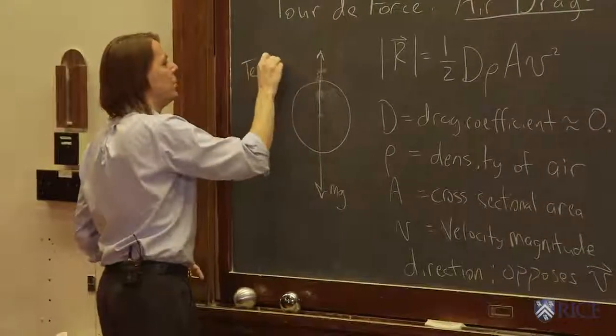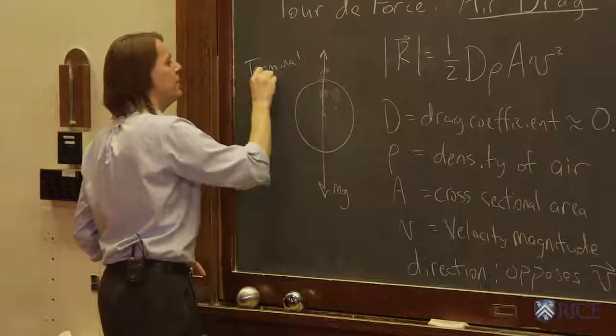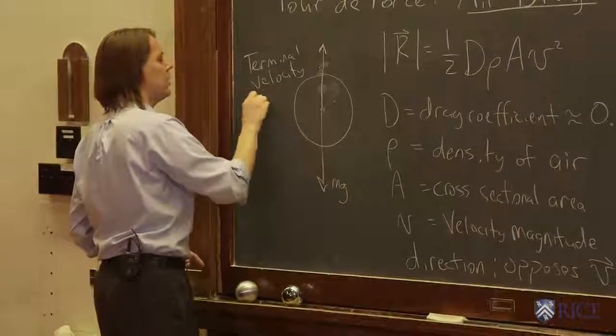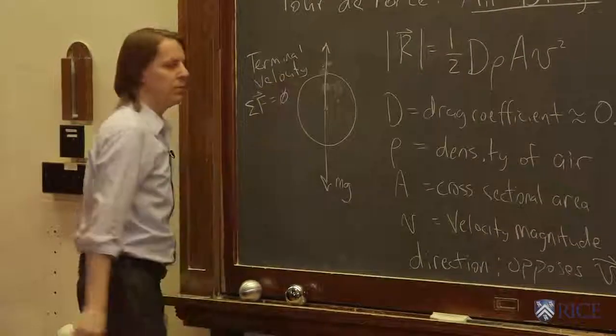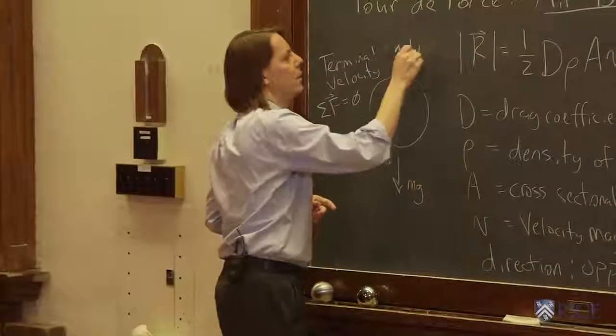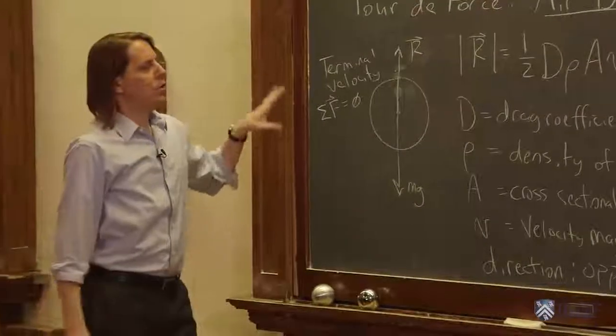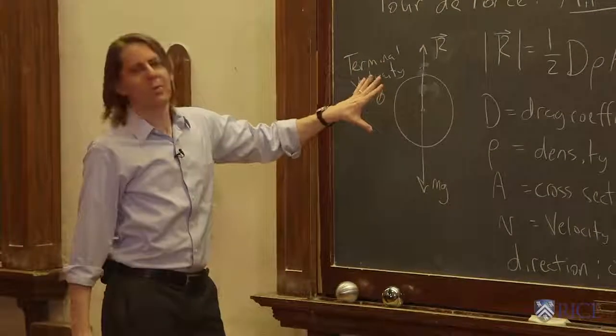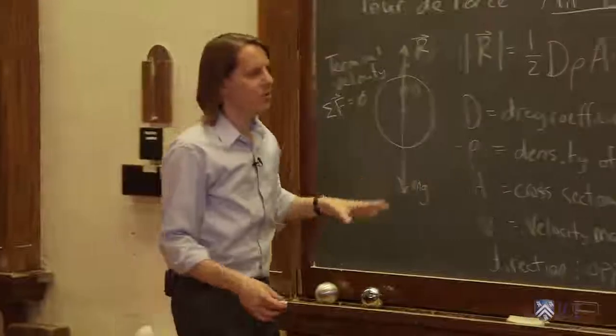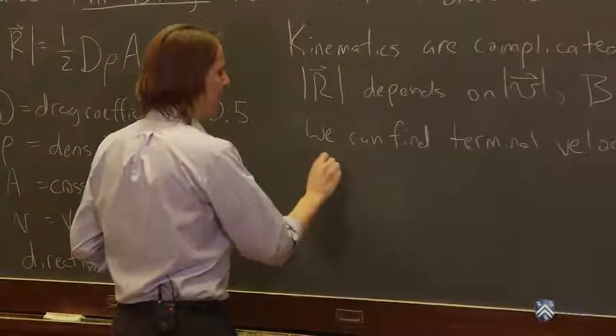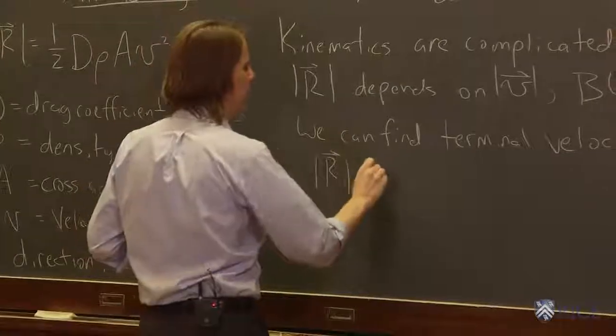Eventually, when you reach terminal velocity, that's the point where the sum of the forces equals zero, where the weight is balanced by r. So to figure that out, we don't have to do detailed kinematics. We just have to say, when is that true? Well, that's true when the magnitude of r equals mg. You just write them as scalars.